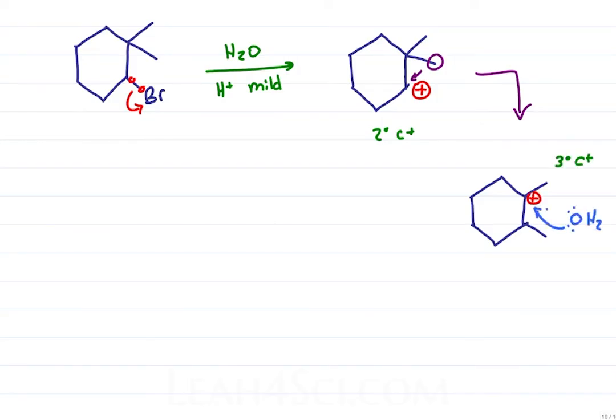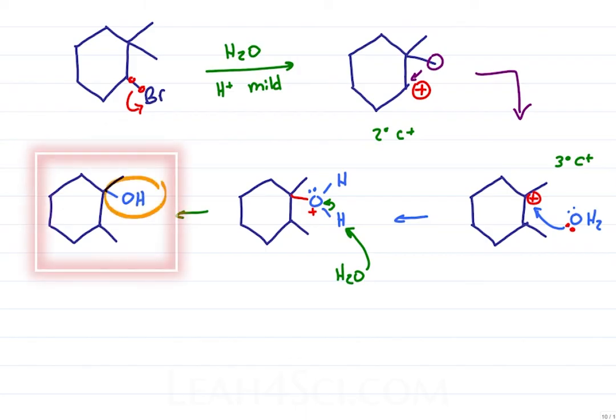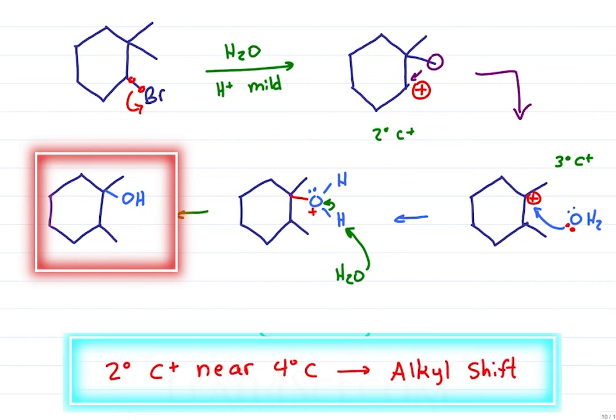Once again, water comes in to attack the carbocation forming an oxonium, which we deprotonate with another water molecule for a final tertiary alcohol. Look at that. An alcohol on the carbon near where the leaving group departed. And the shortcut? Recognizing that an SN1 reaction with a carbocation intermediate will form on the secondary carbon near a quaternary carbon, automatically resulting in a methyl shift, a carbocation at the more stable position, and an OH group adding at the more stable carbocation position.